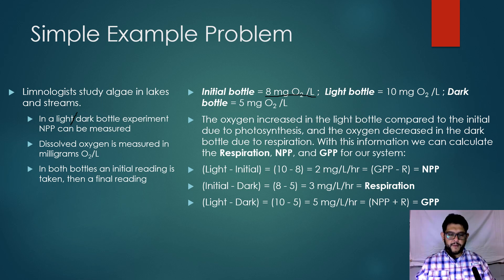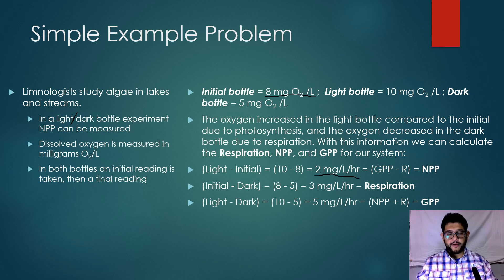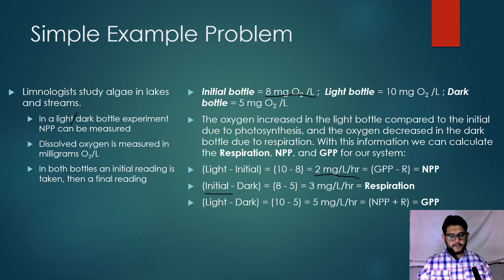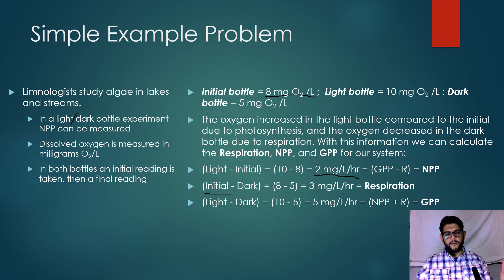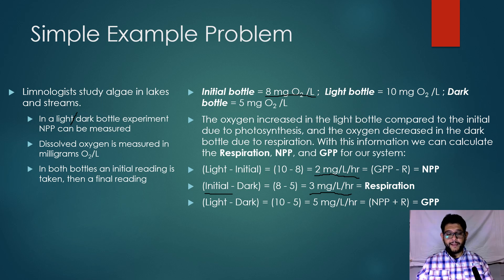The light bottle starts at 8 milligrams but goes up to 10. That tells us it's producing 2 milligrams per liter per hour — that is our net primary productivity, because you started at 8 and gained 2. But that still doesn't tell us how much was respired, so that's when you need the dark bottle. You take the initial amount and subtract how much the dark bottle ended at, because the dark bottle shows oxygen used up. It started at 8 but went down to 5, meaning it used 3 milligrams per liter per hour — that's our respiration.